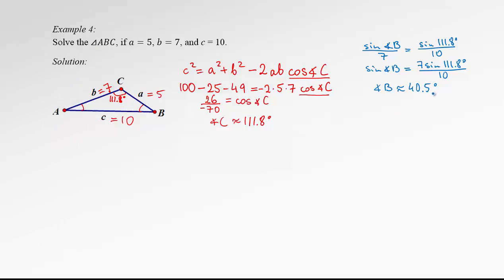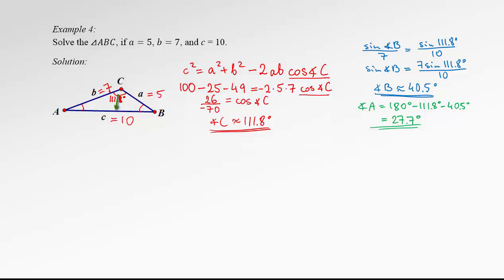What's left is to find angle A: 180 degrees minus 111.8 minus 40.5 gives us 27.7 degrees. The triangle is solved. Let's check: the largest angle, 111.8 degrees, should be across the longest side — and yes, it is. The smallest angle, 27.7 degrees, should be across the shortest side, which is 5. Everything looks correct.